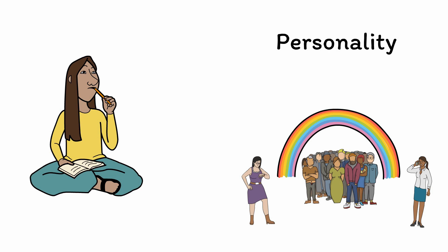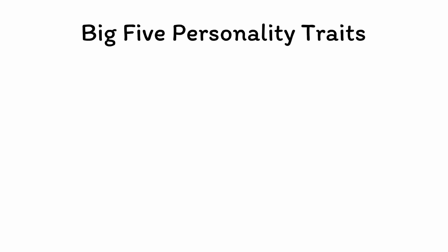Instead, personalities exist on a spectrum, with a few people fitting neatly into categorical buckets, but most people falling somewhere in the middle. For this reason, personality is best described using dimensional traits rather than categorical types. There are different ways of describing personality traits, but the most widely accepted is known as the Big Five Personality Traits, also called the Five-Factor Model.